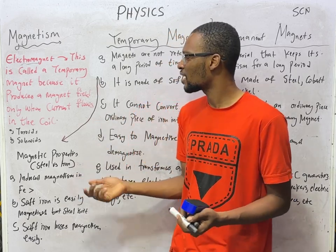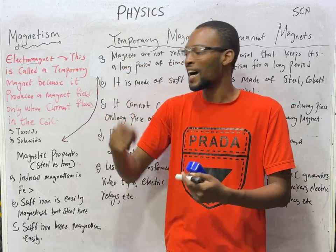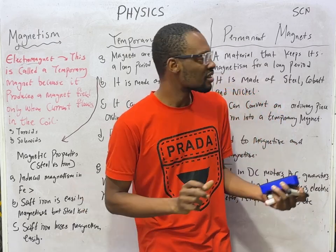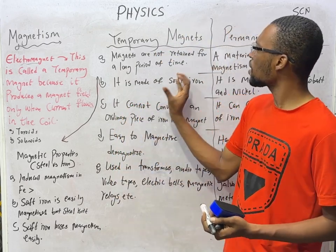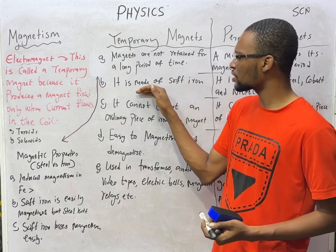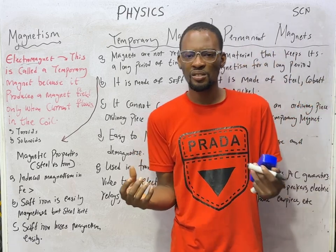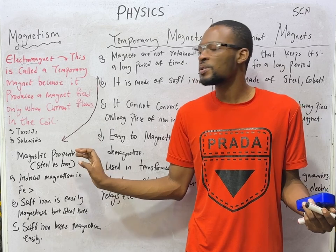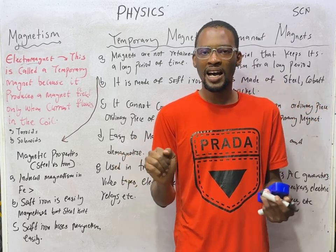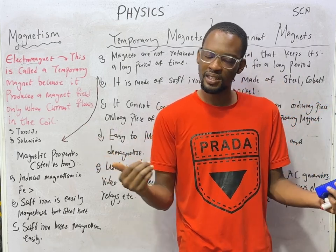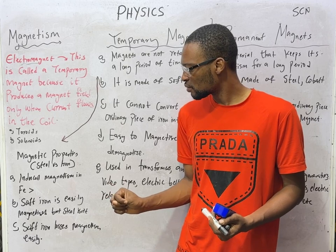Examples of electromagnets are torroids and solenoids. In physics, solenoids are coils of wire and are electromagnets. Looking at temporary and permanent magnets, soft iron is very important for temporary magnets, while steel is very important for permanent magnets. Let's do a quick comparison: induced magnetism in iron is greater than in steel. Soft iron can easily be magnetized, but steel cannot.